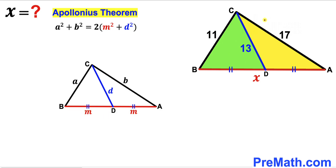I'm going to label the sides: BC is lowercase a, AC is lowercase b, the median is lowercase d, segment BD is lowercase m, and segment AD is lowercase m as well. Now our task is to find the value of m.